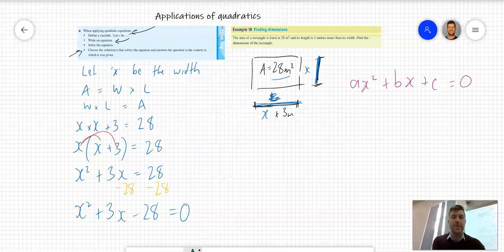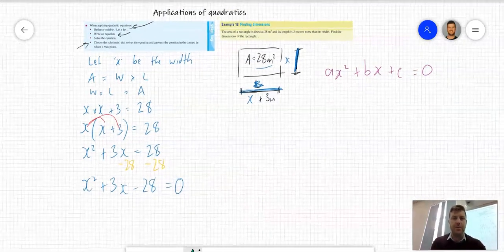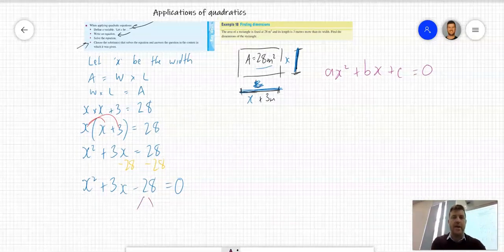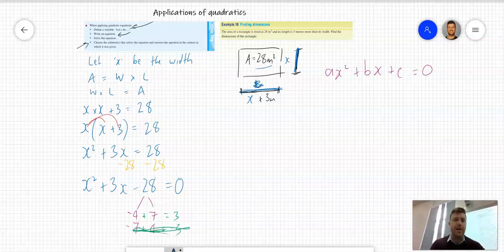It's the sum-product type factorization. Two numbers multiply to give me -28. Negative 4 and positive 7? If I add these two, that's positive 3 - that's what I want. If I add -7 and +4, that's negative 3, so it's not that one.